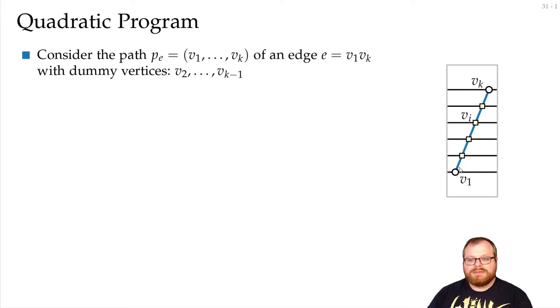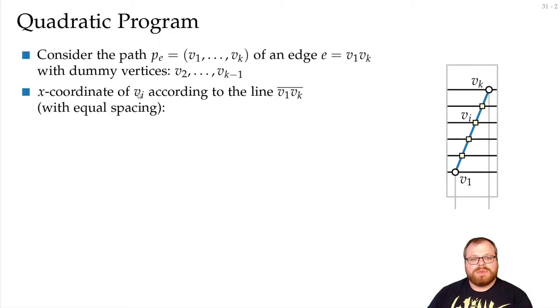So let's say we have two vertices that are connected by an edge, and that edge spans many layers, so we have a bunch of dummy vertices in between here. Now the x-coordinate of every dummy vertex, according to this line, should be as follows. If we want this line to be straight, then this vertex vi should lie at the position vi plus some part of this distance.